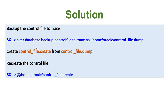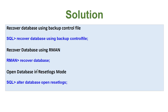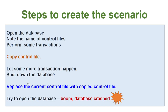To repeat the steps: first, backup the control file to trace; recreate the control file; recover the database using backup control file; recover the database using RMAN; then run 'ALTER DATABASE OPEN RESETLOGS' to open the database in RESETLOGS mode.